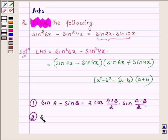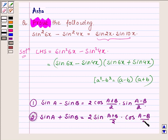And second is sin A + sin B = 2sin((A+B)/2)·cos((A-B)/2).